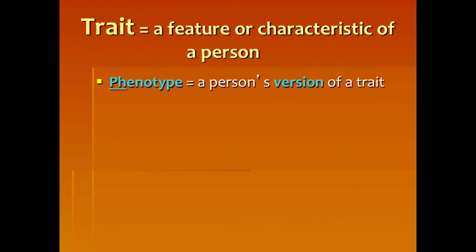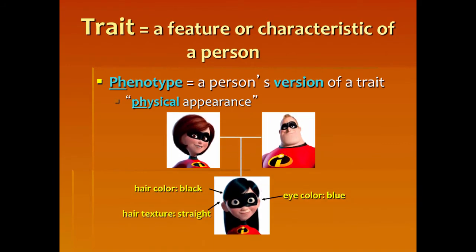Let's talk about the word phenotype. This is a very important vocabulary word, so write it down and write the definition. A phenotype is a person's version of a trait. Think of the prefix 'ph' in phenotype — it's how somebody physically looks. When I see that someone has blue eyes, blue eyes is a phenotype. So phenotype is your physical appearance: blue eyes, black hair, straight silky hair, or curly hair — those are your phenotypes.